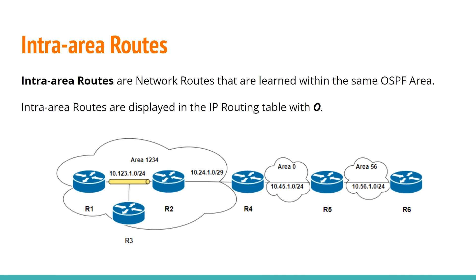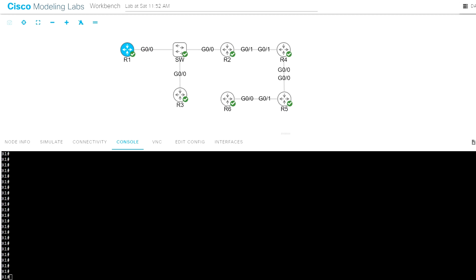Intra-area routes are network routes that are learned within the same OSPF area, and they are displayed in the IP routing table with the letter O. For example, all routes within area 1-2-3-4 are intra-area routes. I'll use a network with six routers: R1, R3, R2, and the G0/1 interface on R4 are in area 1-2-3-4. G0/0 interfaces on R4 and R5 are in area 0, and G0/0 on R6 and G0/1 on R5 are in area 56.